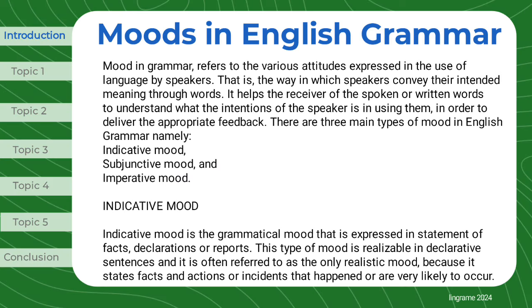Moods in English grammar explained. Mood in grammar refers to the various attitudes expressed in the use of language by speakers — that is, the way in which speakers convey their intended meaning through words. It helps the receiver of the spoken or written words to understand what the intentions of the speaker are in using them, in order to deliver the appropriate feedback. There are three main types of mood in English grammar: namely indicative mood, subjunctive mood, and imperative mood.